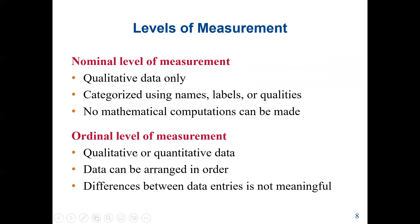Next is the ordinal level of measurement. Ordinal level can be qualitative or quantitative. The main keyword here is that data can be arranged in order. For example, in the NBA or baseball league, we can rank teams: number one is the Yankees, number two is Boston. Or a test grade — A, B, C — or scores like 90%, 80%, etc. So the key point of ordinal measurement is that data can be arranged in order.